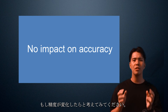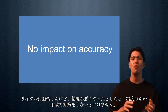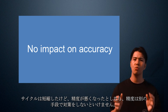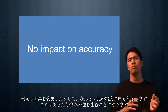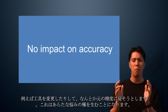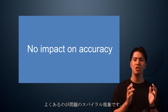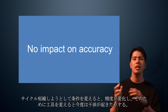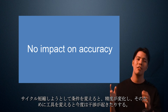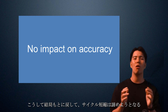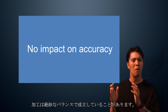What if the accuracy changes? If the cycle time is shortened but the accuracy becomes worse, then you have to take other measures to deal with the accuracy — for example, you may change the tooling to try to get back to the original accuracy. This creates a new problem. It's a spiral of problems that often occurs: if you change the condition to shorten the cycle time, the accuracy will change, and if you change the tooling, interference will occur. Thus we end up returning to the original condition and giving up on cycle reduction.